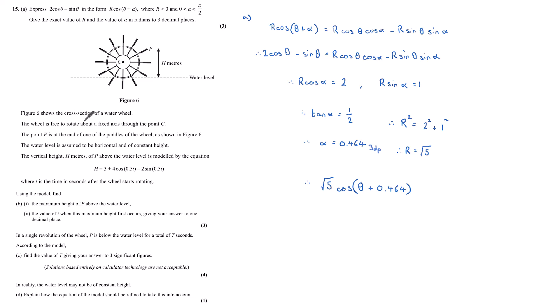Figure 6 shows the cross section of a water wheel. The wheel is free to rotate about a fixed axis through the point C. The point P is at the end of one of the paddles of the wheel. The water level is assumed to be horizontal and of constant height. The vertical height h meters of P above water level is modeled by the equation h equals 3 plus 4 cos(0.5t) minus 2 sine(0.5t), where t is the time in seconds after the wheel starts rotating.